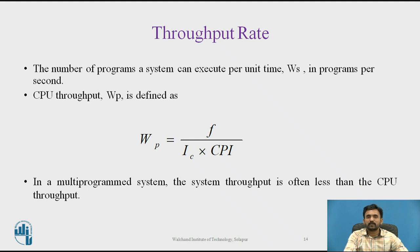Another important performance measure is the throughput rate, denoted WP. The number of programs a system can execute per unit time is WP (programs per second). CPU throughput WP is defined as f / (number of instructions × CPI). In a multi-program system, the system throughput is often less than the CPU throughput.